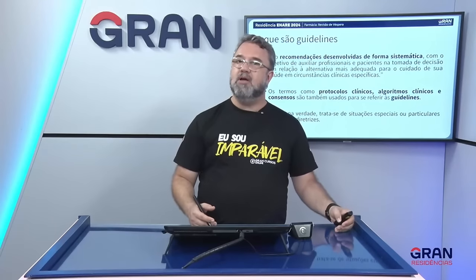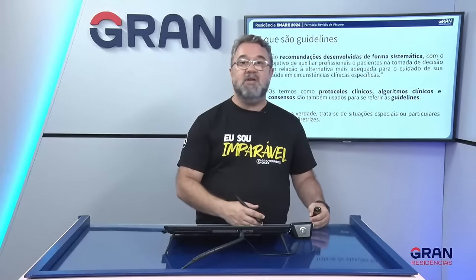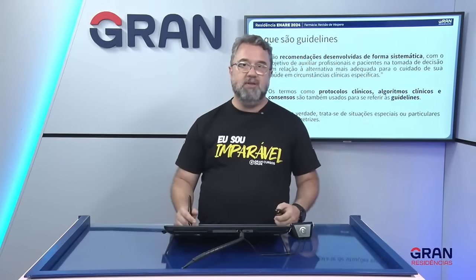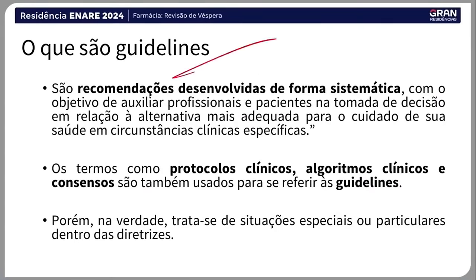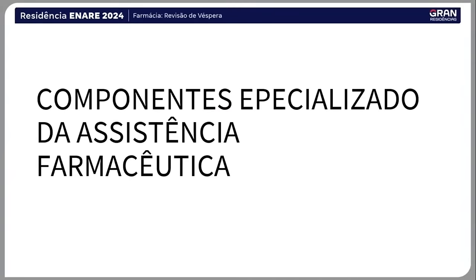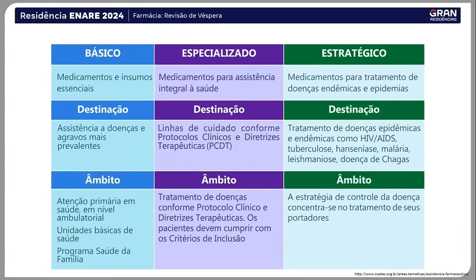O Ministério Público e o Tribunal de Contas da União estão de olho e vão perguntar por que estão incorporando esse medicamento — e a resposta é porque está no protocolo X ou Y. Esses protocolos têm vários nomes: guidelines, algoritmos clínicos, consensos da Sociedade Brasileira de Endocrinologia, Cardiologia, Diabetes. Os guidelines oficiais do SUS são os famosos Protocolos Clínicos e Diretrizes Terapêuticas (PCDT), muito utilizados no componente especializado da assistência farmacêutica.